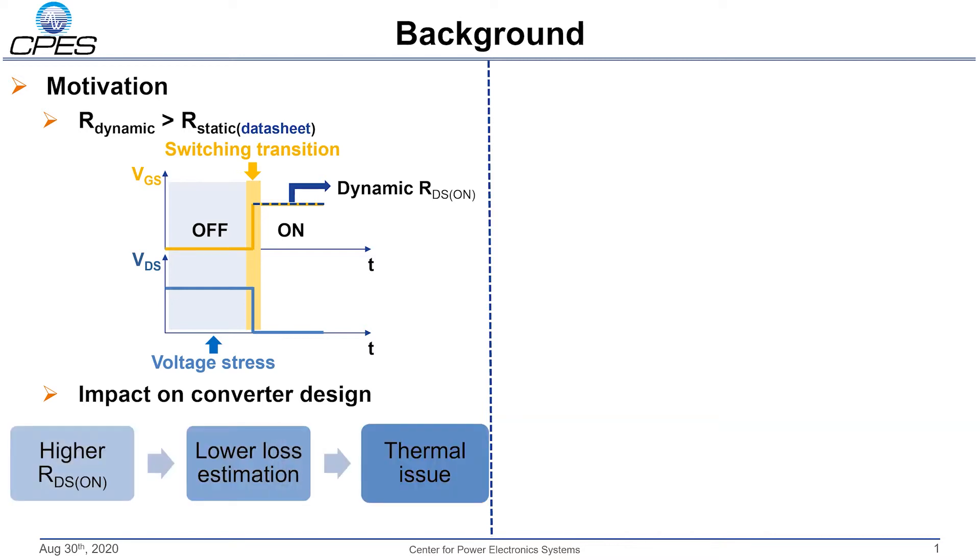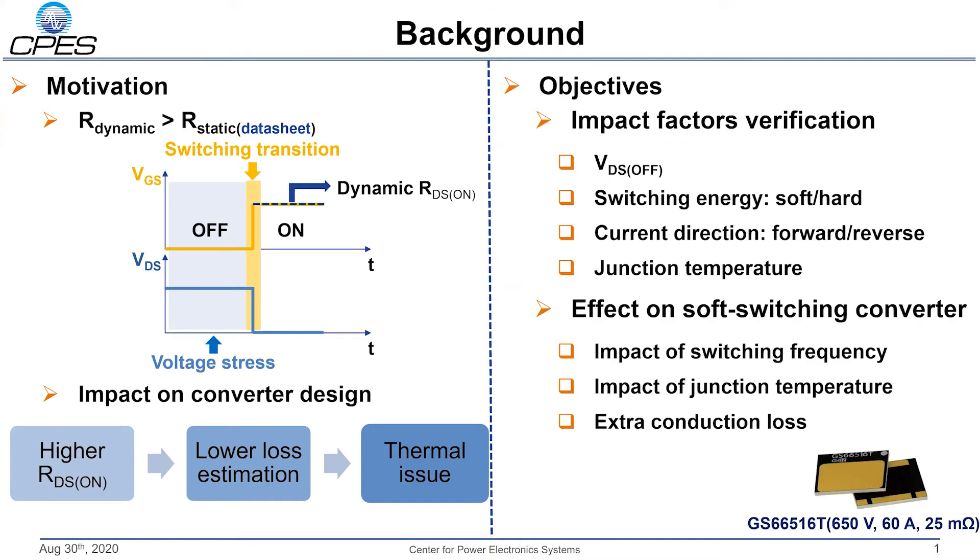In GaN-based power converters, dynamic RDS(ON) effect can lead to lower loss estimation during the design stage, ultimately affecting the performance of the converter cooling system. The objective of this work is to characterize dynamic RDS(ON) effect, seeking to incorporate it into the design process and studying its dependence and impact under various operating conditions.